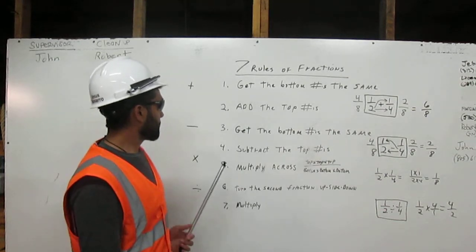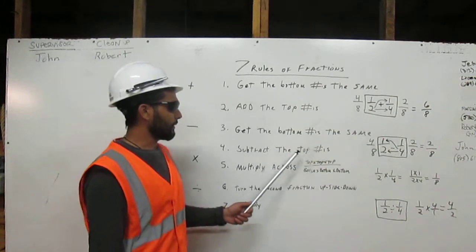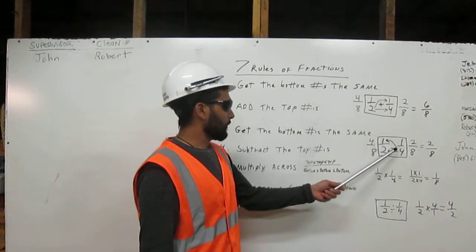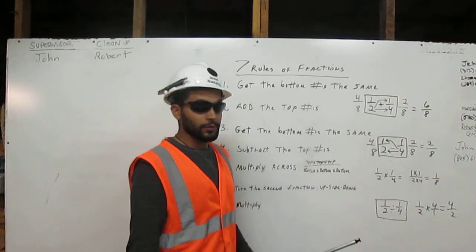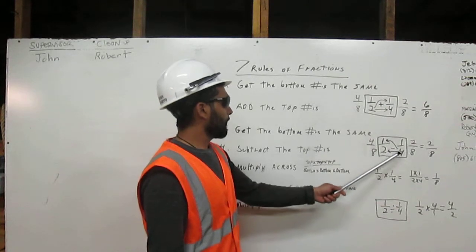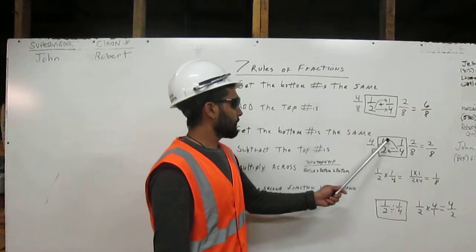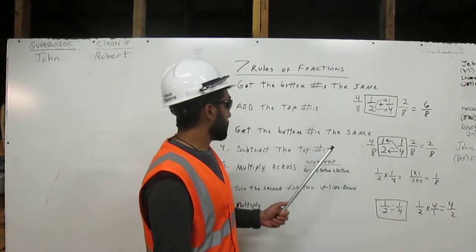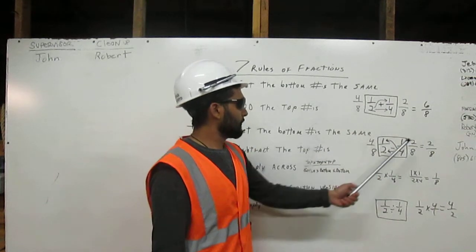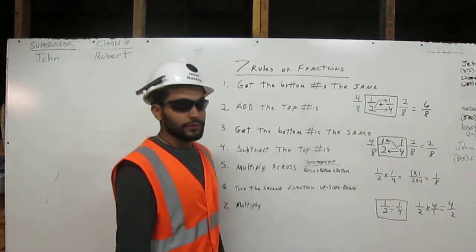To subtract fractions, we get the bottom numbers the same, and then we subtract the top numbers. In our example here, we have one-half minus one-fourth, and we put it in the box because we're going to cross multiply. And we have four times two is eight. Four times one is four. And two times four is eight. Two times one is two. And then we're going to subtract the top numbers, which is four minus two is two. And we carry over the eight. And that's how we subtract fractions.